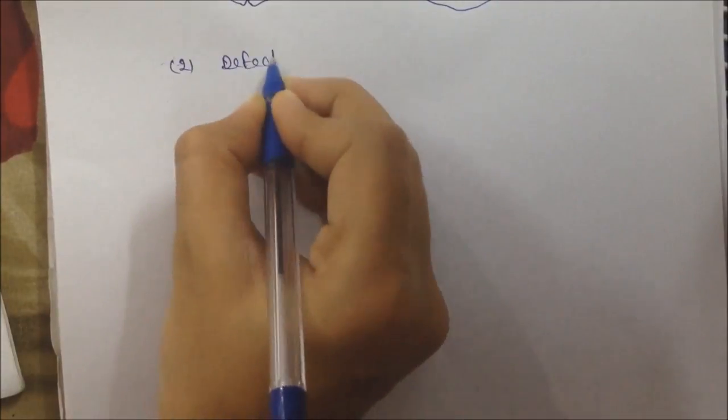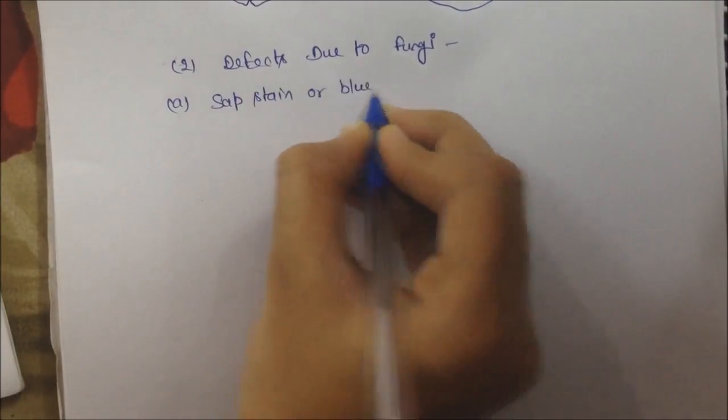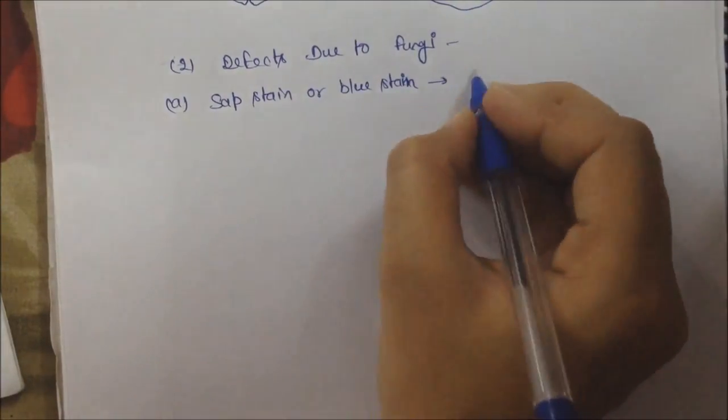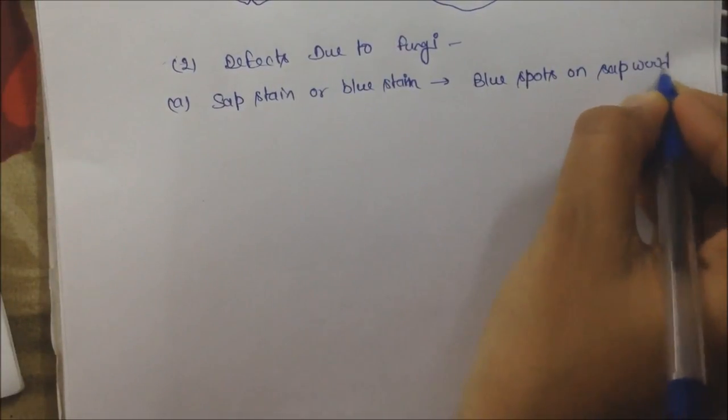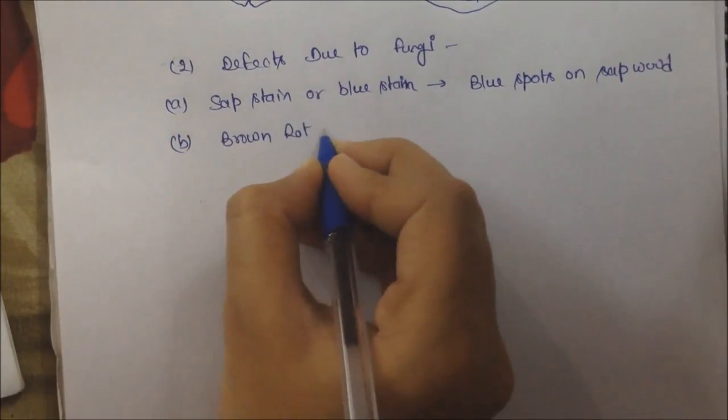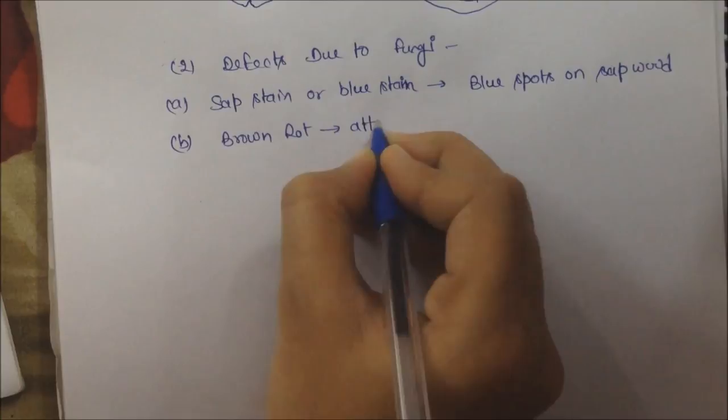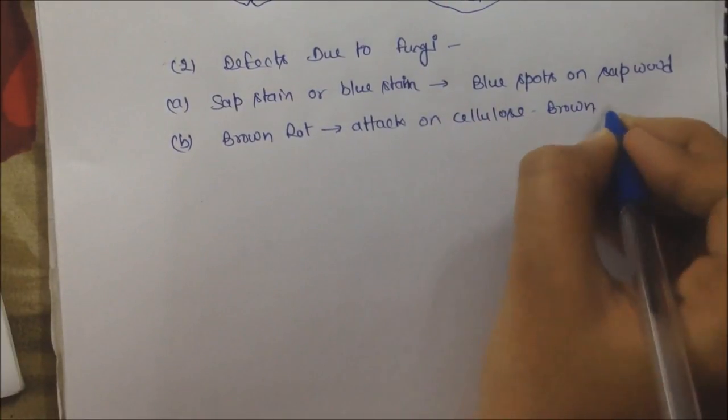Next is defects due to fungi. First is sap stain or blue stain. Second is brown rot. When the tree is affected by cellulose, brown spots appear. The timber is decayed. That is called brown rot.